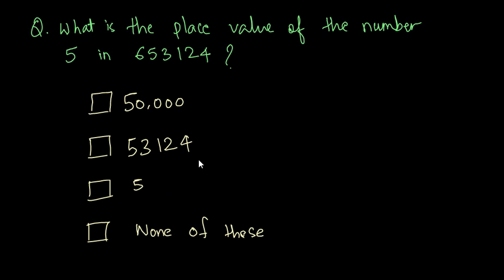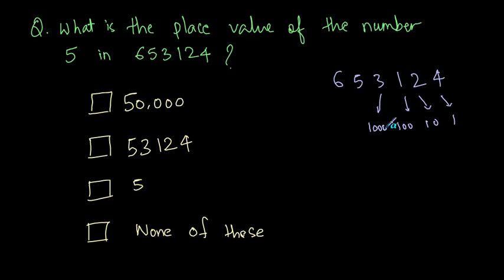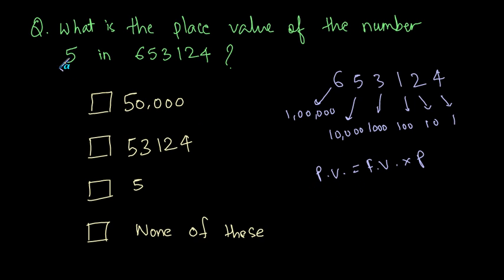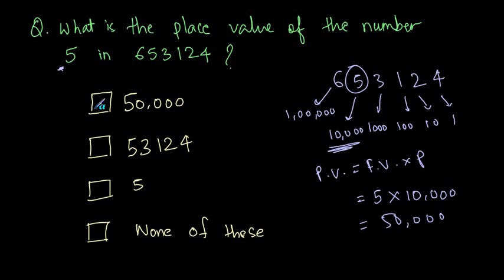Let's solve the next question: what is the place value of the digit 5 in 653124? Let's write the number and find the place of each digit: 4 is in the 1s place, 2 is in the 10s place, 1 is in the 100s place, 3 is in the 1000s place, 5 is in the 10,000s place, and 6 is in the 1,00,000s place. The place value formula is face value multiplied by its place. So the place value of 5 is 5 into 10,000, which equals 50,000.